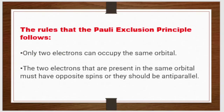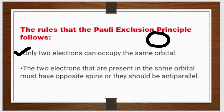This principle follows two rules. The first rule is that only two electrons can occupy the same orbital — in one orbital, only two electrons can be present.